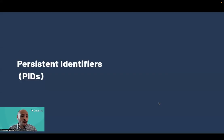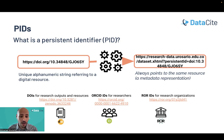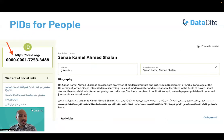Before highlighting the DataCite Global Access Program, let's have a quick introduction about persistent identifiers. A persistent identifier is a unique alphanumerical string referring usually to a digital resource. It always points to the same resource with a metadata representation about that research output. There are different types of PIDs: DOIs can be assigned for research outputs and resources, ORCID IDs for people, and ROR IDs for places like research organizations.